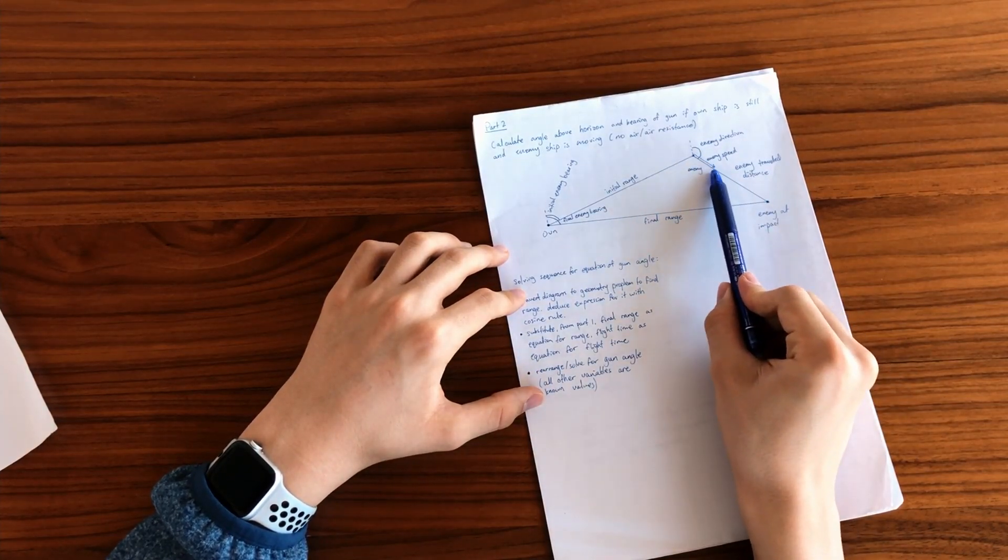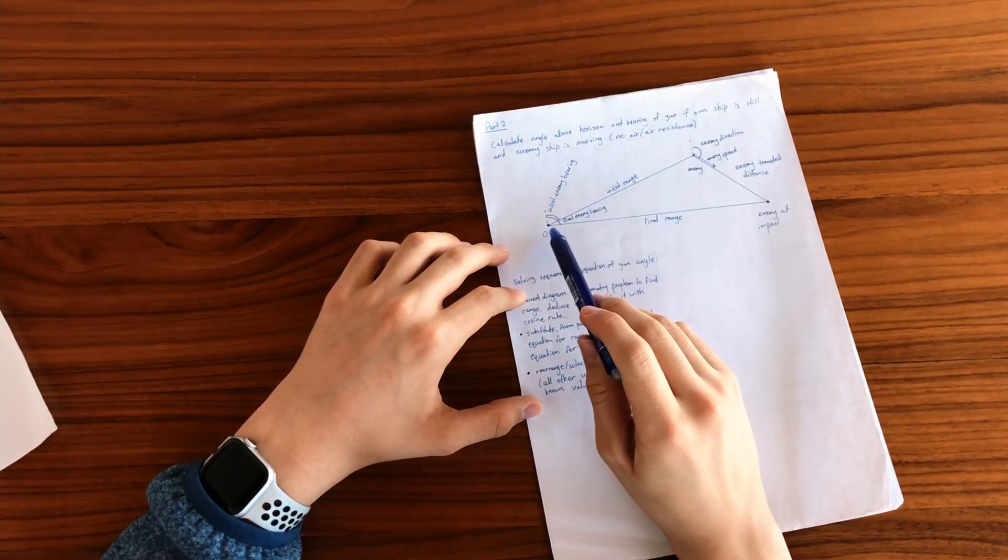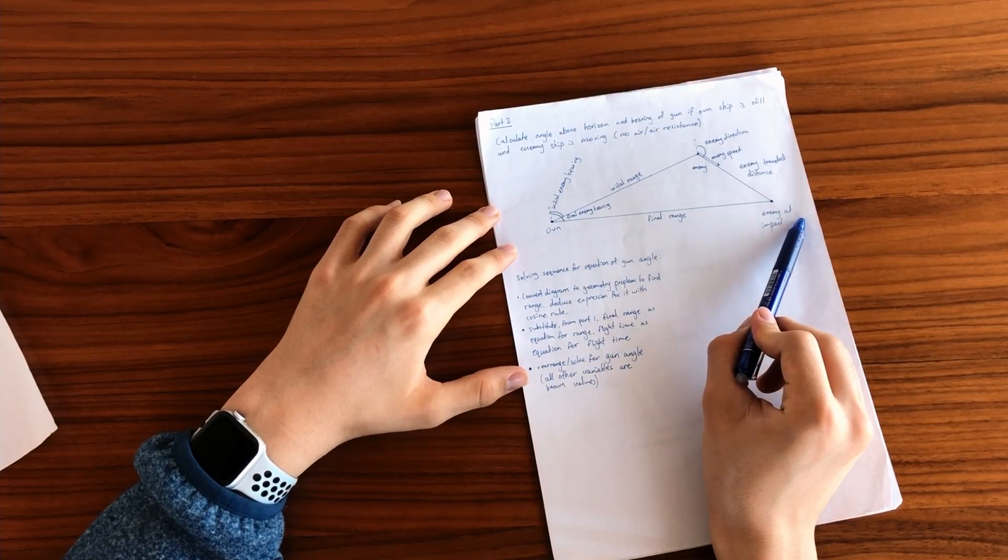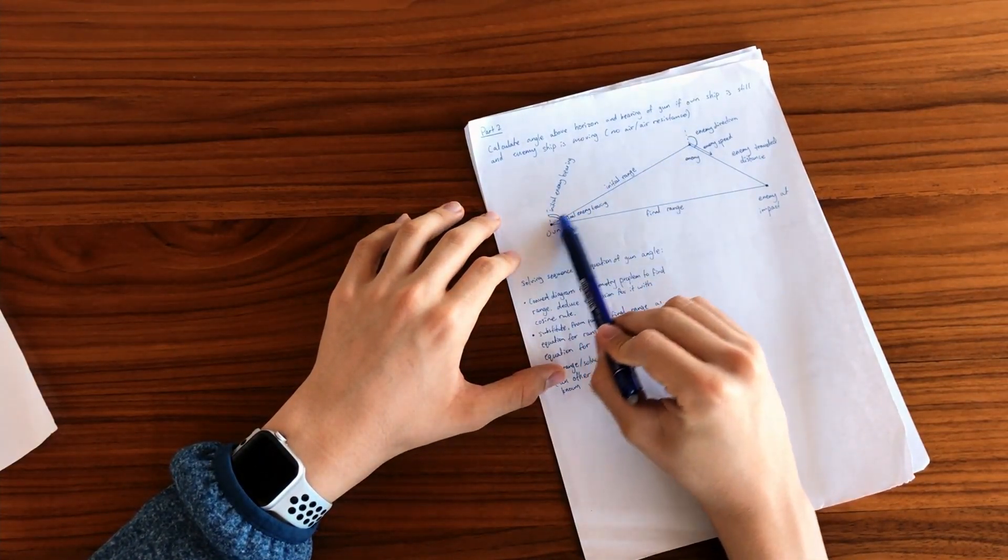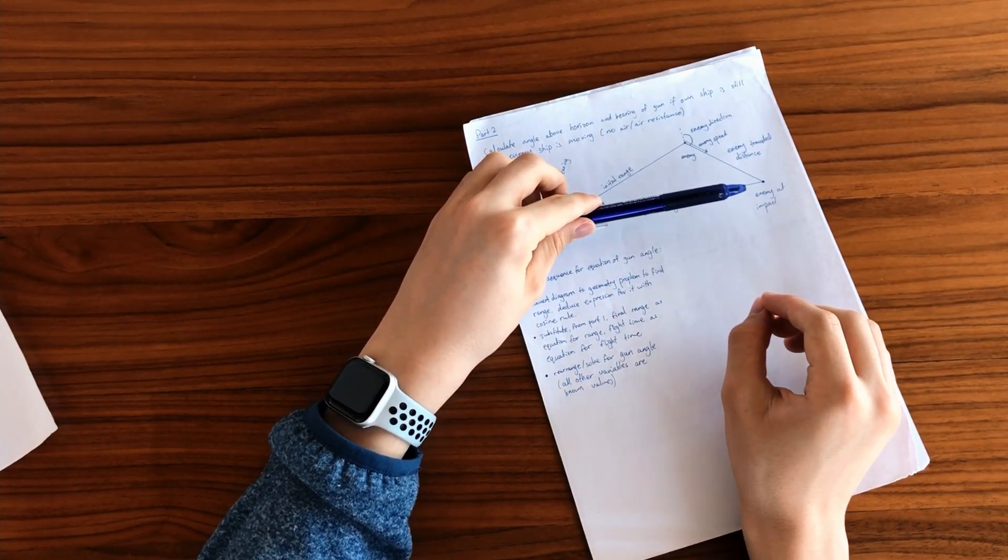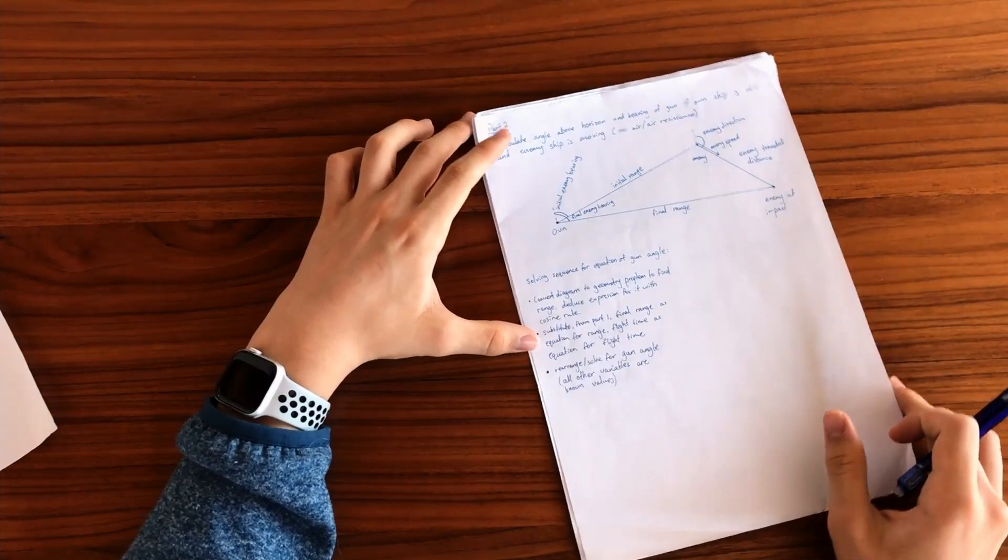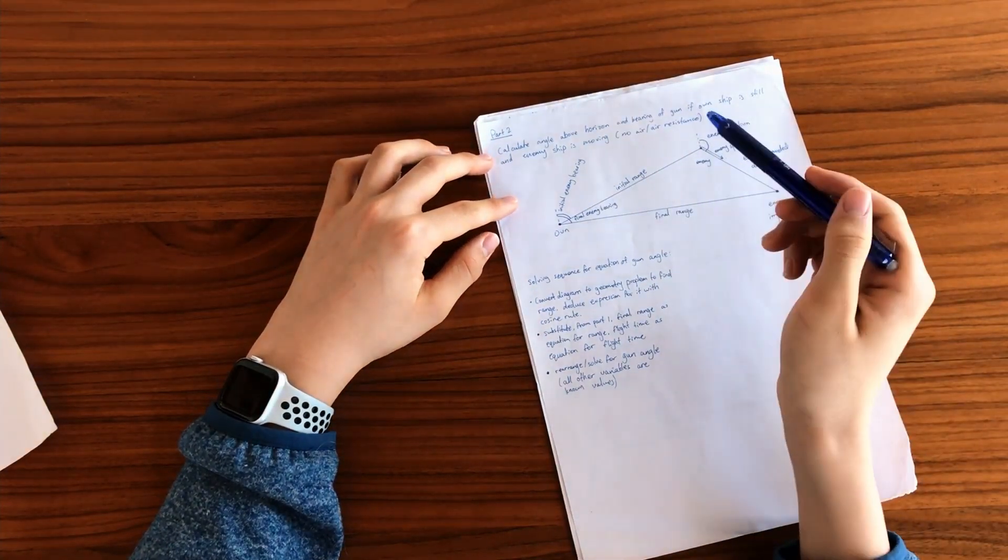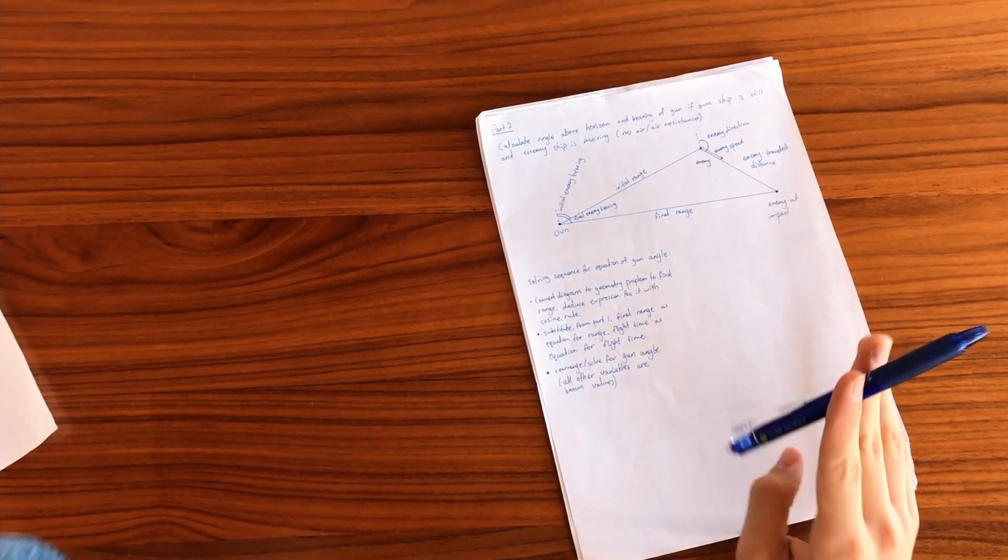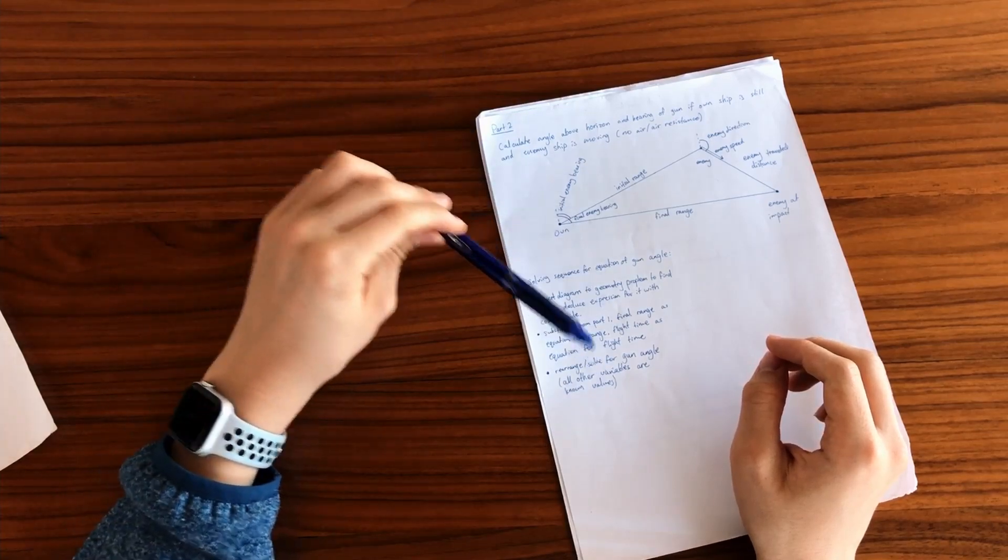So this is the enemy's initial position, and this is their travel direction, and this is their travel path. And the distance that they travel, as I said just now, depends on the flight time of the projectile, right? So it's the computer's job to calculate how much lead to have and how far to aim. So even though this is the initial range at the point of firing, the gun isn't aiming directly at where the enemy is right now, as it predicts where it will be. So this is the direction and range that the gun actually fires.